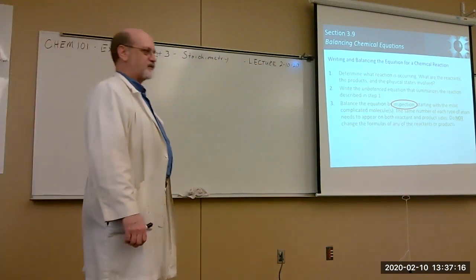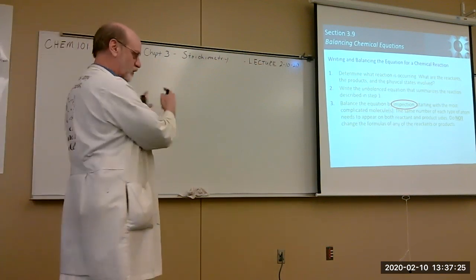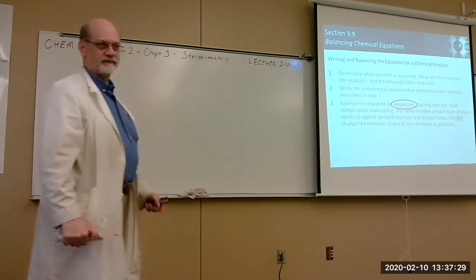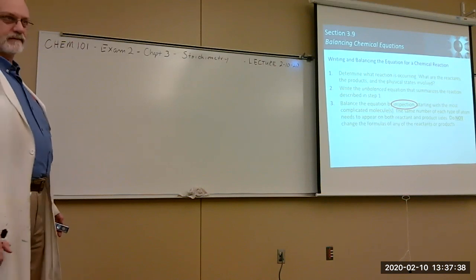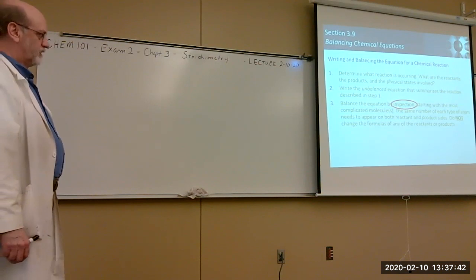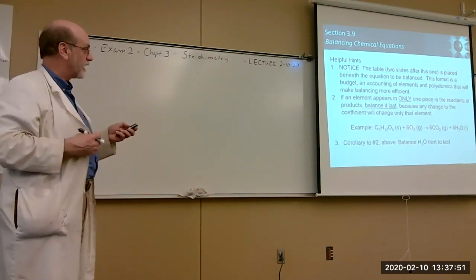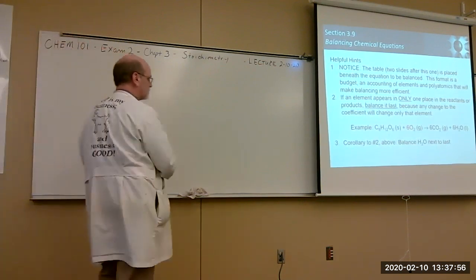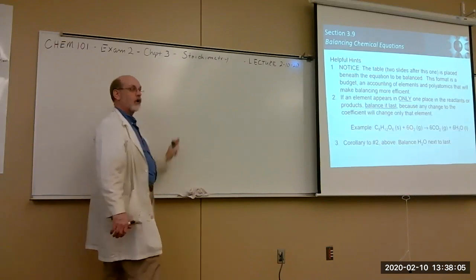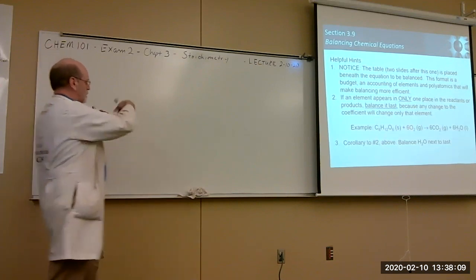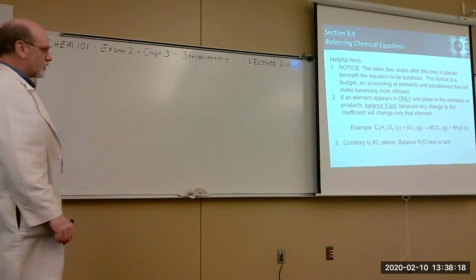Most chemistry textbooks say 'balance by inspection' — that's a cop-out. They don't tell you how to balance; they just show you the result. The recommended technique: first write your reaction, then set up a budget — count how many atoms of each element you have on each side, and keep a running correction as you go. That way, when you're done you know you're balanced.